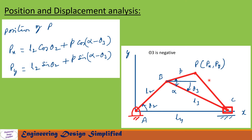Let us write the displacement equation along x first. px equals l2·cos(theta2) plus p·cos(alpha minus theta3), where this angle is (alpha minus theta3). This sum gives the horizontal position of point P. Similarly, the displacement equation along y gives py equal to l2·sin(theta2) plus p·sin(alpha minus theta3), which is the vertical position of point P.